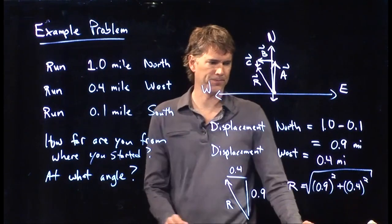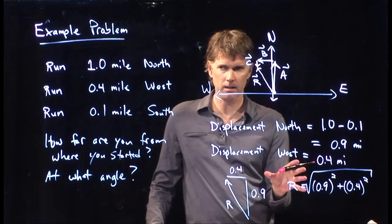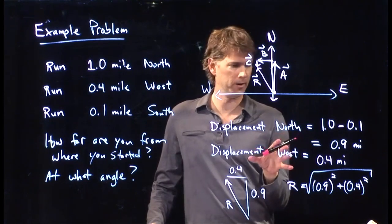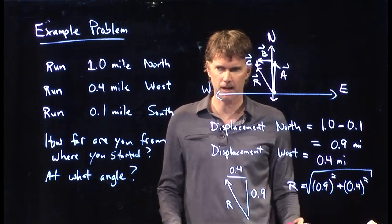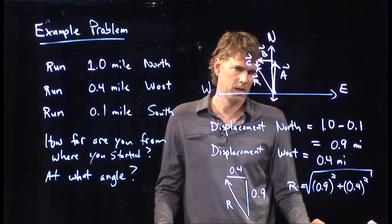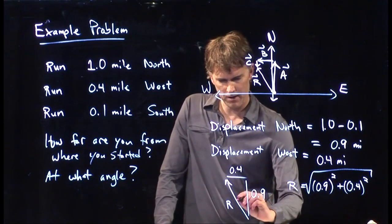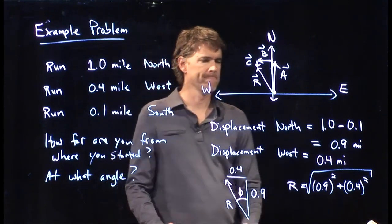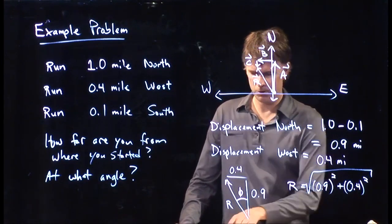Add them up and take the square root. We'll revisit this with unit vectors, but you can just approach it this way — visualize north-south movements independently from east-west movements. Then we ask: what angle? You can pick any angle. Somebody punch this into your calculator and tell me what you get for R.